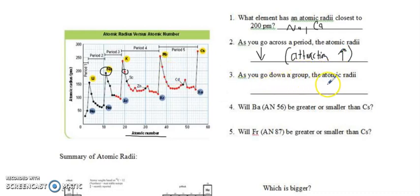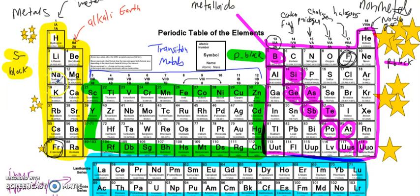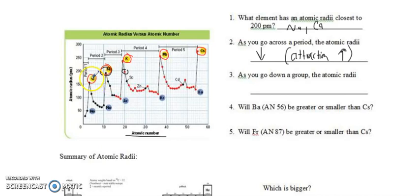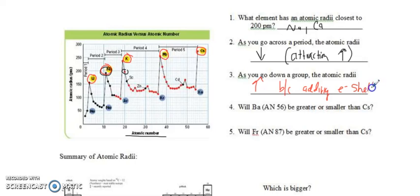As you go down a group, the atomic radii do what? Let's look at our alkali metals: lithium, sodium, potassium, rubidium, and cesium. Looking at the periodic table, going from lithium to sodium to potassium to rubidium to cesium, the atomic radii is going up. And why? That's because we're adding more electron shells. So the lower you go on the periodic table, the more layers there are on your atomic onion.